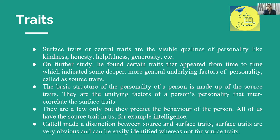The basic structure of personality is made up of source traits. They are the unifying factors of a person's personality — they intercorrelate with the surface traits. There are only a few source traits, but they can predict a person's behavior. All of us have source traits within us. Surface traits are very obvious and can be easily identified, whereas source traits are not as easily visible or obvious.